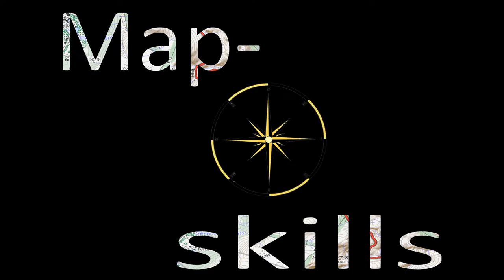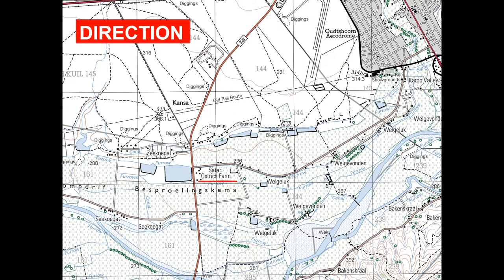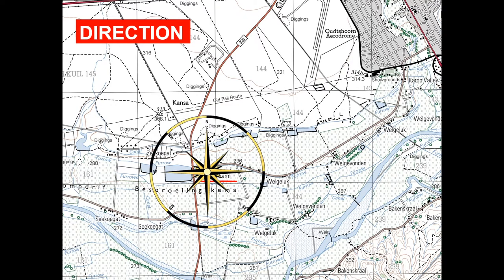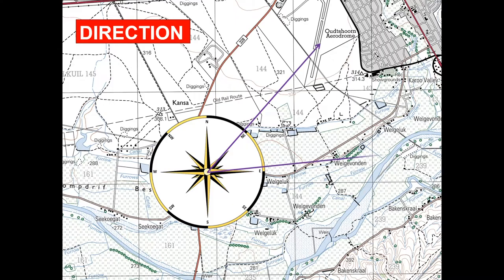Moving on to our map skills. With regards to direction, we can be asked to provide the distance from Safari Ostrich Farm, underlined in red, to the Outshoorn Aerodrome, the diggings, Circle Ghat, as well as trigonometrical station 113.